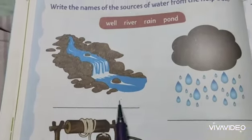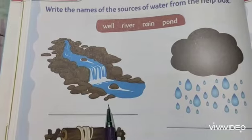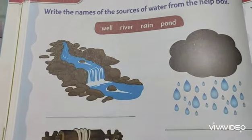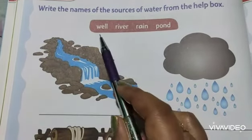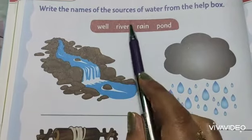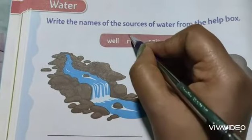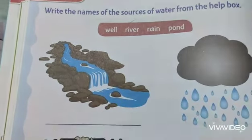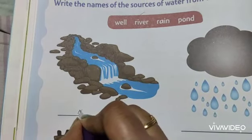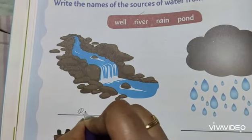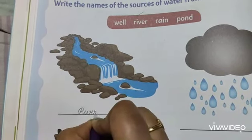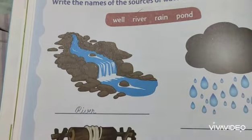At first, identify this picture. What is this? It should be a well — no, it's a river. Yes! So put a tick mark and write here: River — R-I-V-E-R.